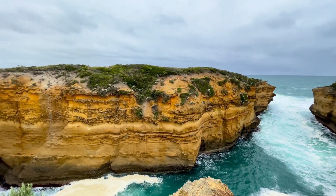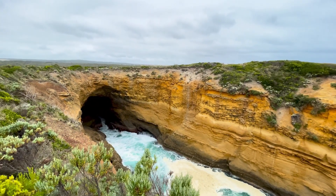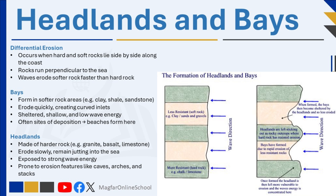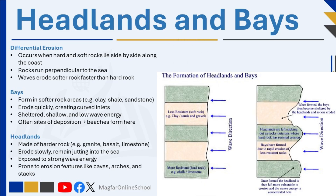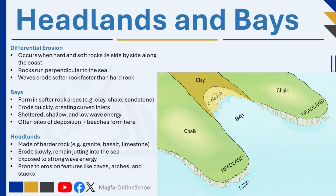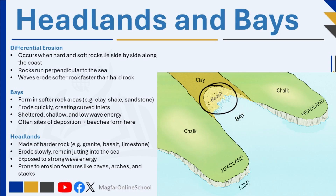Headlands and bays are classic coastal features that form due to a process called differential erosion. This happens when the coastline is made up of alternating bands of hard and soft rock running perpendicular, or at right angles, to the sea. The difference in rock hardness affects how easily each type can be eroded by wave action. Softer rocks such as clay, shale, or sandstone are less resistant to erosion. When waves continuously strike these areas, the softer rock is worn away more quickly, creating wide, curved indentations in the coastline known as bays. Bays are typically sheltered, shallow inlets where wave energy is dispersed, often becoming sites of deposition where beaches form from the buildup of sand and sediments.